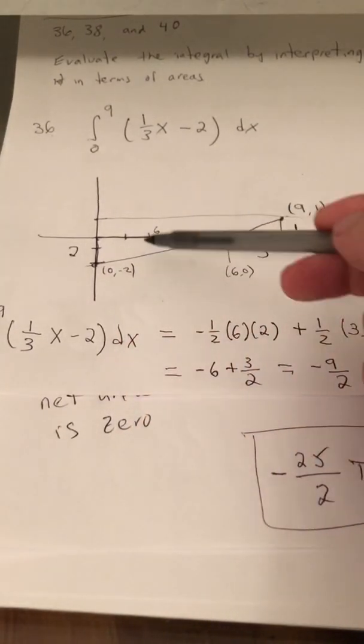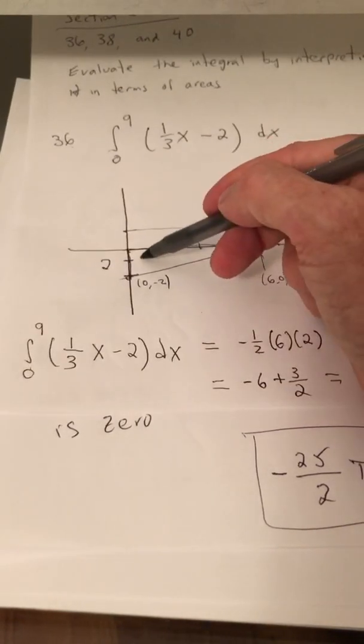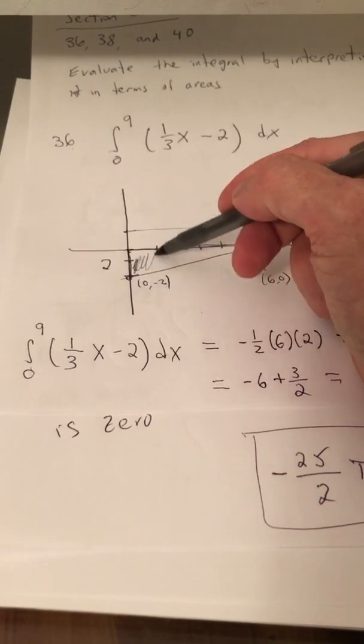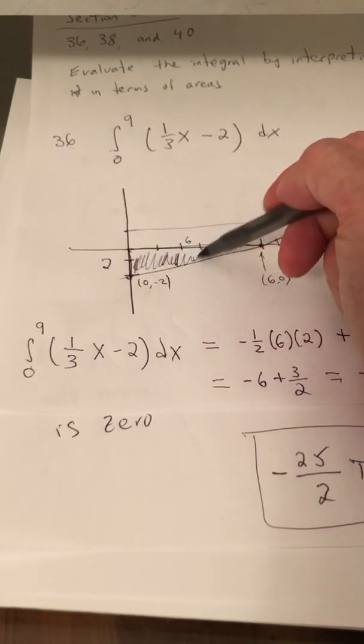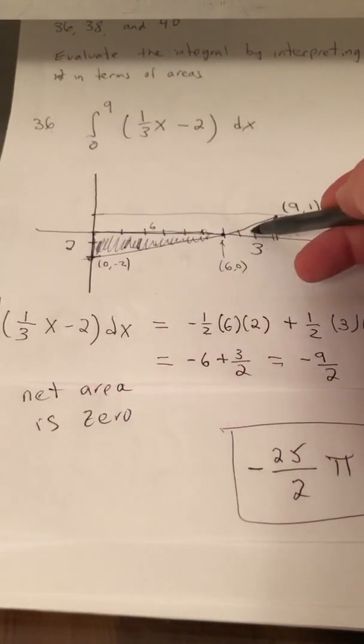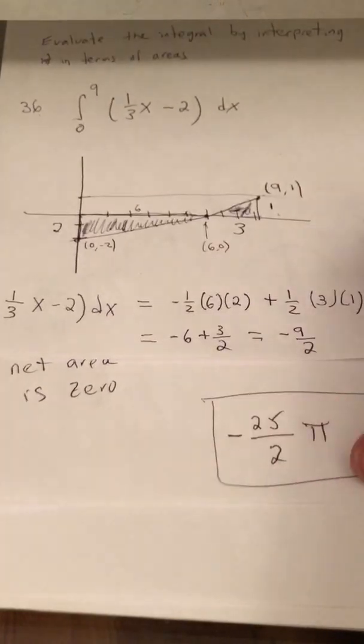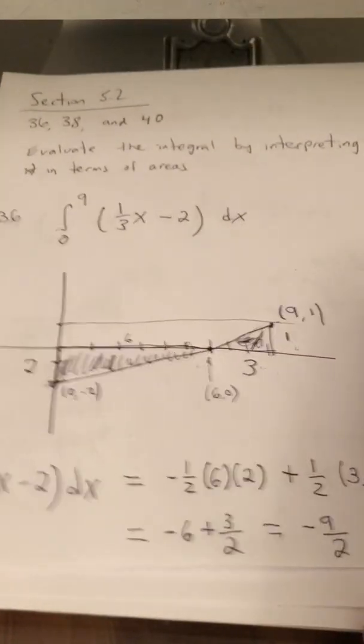Now if the area is below the x-axis, that's a negative area. So notice that what we have are actually two triangles, one of them is below the x-axis and the other is above.